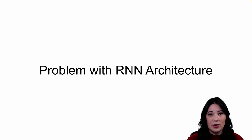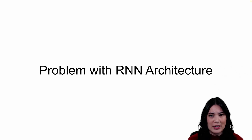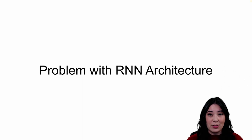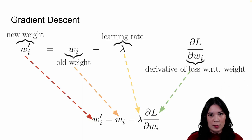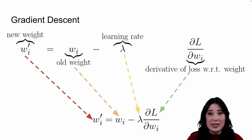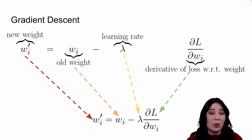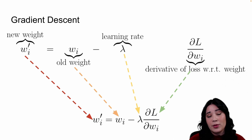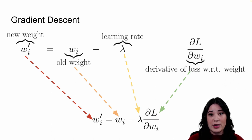Simple recurrent neural networks have a big problem, which is why we typically do not use simple recurrent architectures in real life. To understand this problem we need to review gradient descent. Gradient descent is how neural networks learn and update their parameters, using the gradient along with the learning rate to make adjustments to all the different parameters in our model.